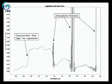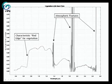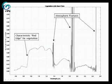Here you see a typical spectrum of green plant material. Strong absorption of chlorophyll is visible in the wavelengths shorter than 0.7 micron, followed by a strong increase in reflectance values towards the near infrared, called the red edge.